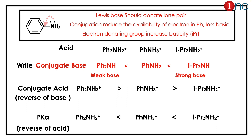If an amine is attached with a phenyl group, there will be delocalization, so the electron will not be available, making it less basic. More phenyl groups means less basic — so less acidic in terms of conjugate base stability. The order of conjugate base release starts with PhNH₂ being the weakest base, then PhNH₂ again, then isopropyl amine.